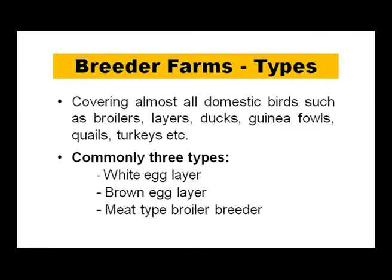Breeder farms cover almost all domestic birds — broilers, layers, ducks, guinea fowls, quails, and turkeys. Commonly three types of breeder farms are observed in our country: one is white egg layer, the second is brown egg layer, and the third is a meat-type broiler breeder.